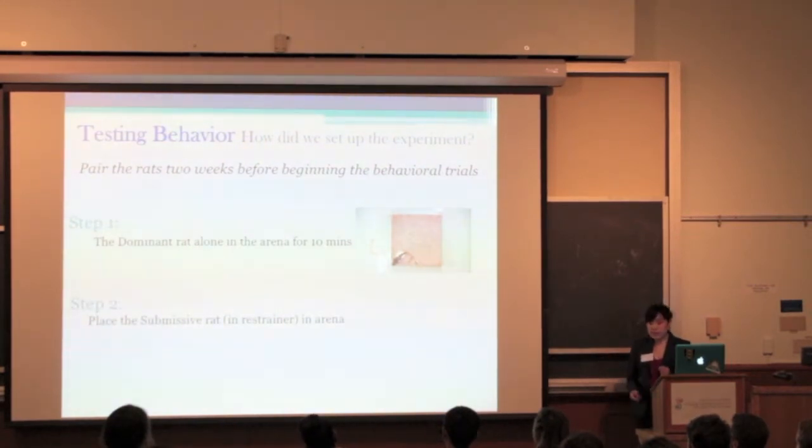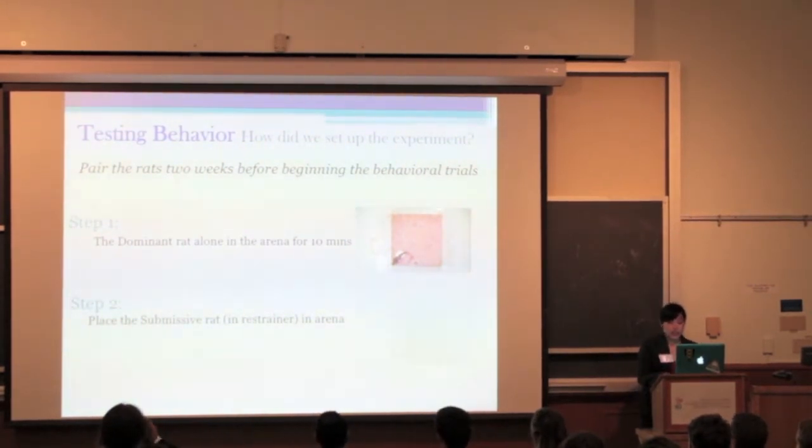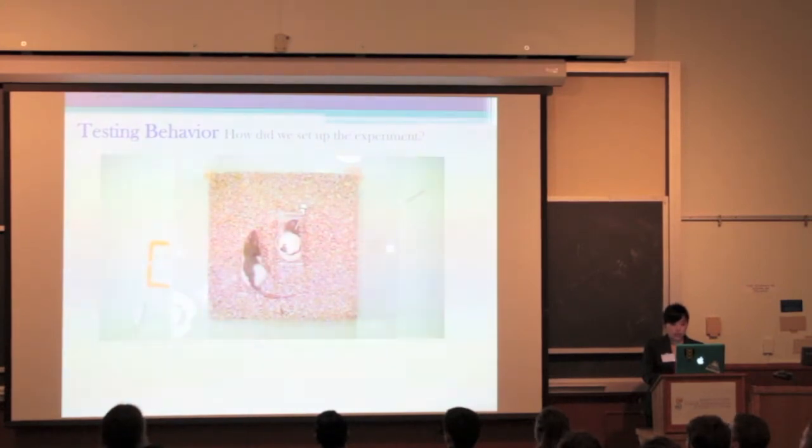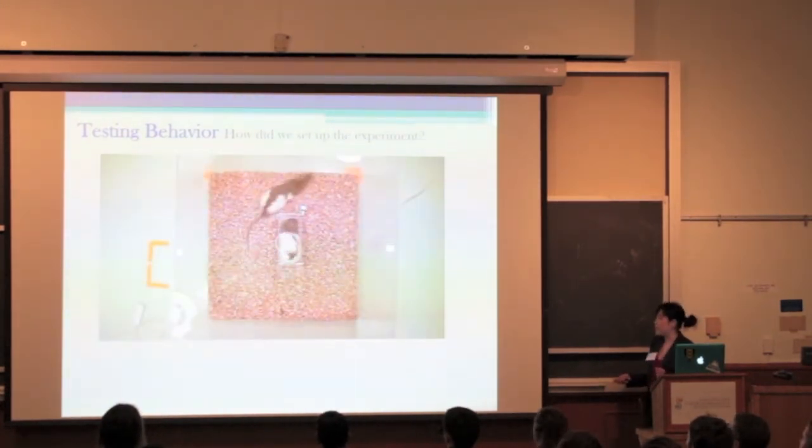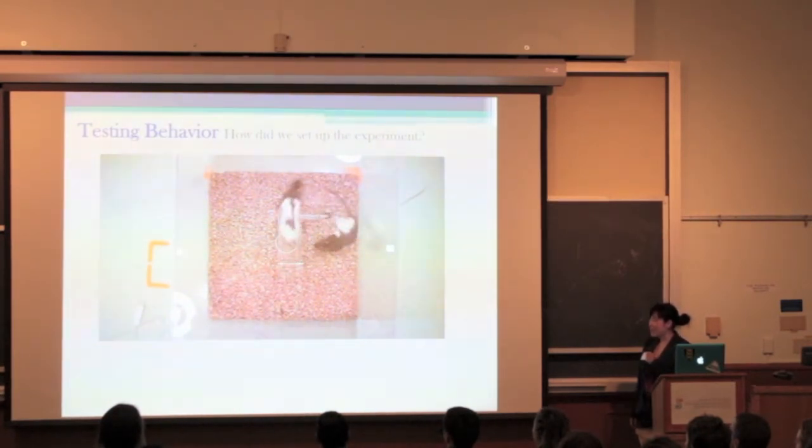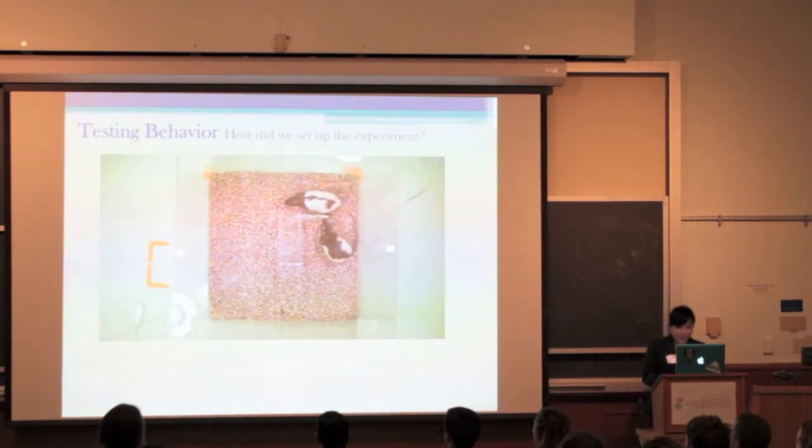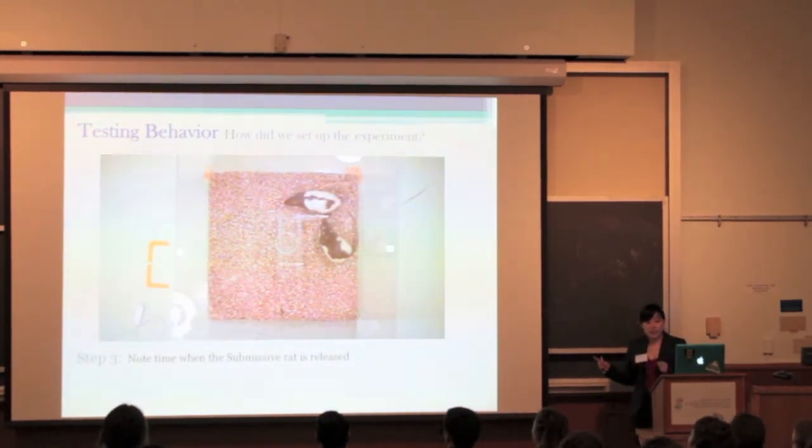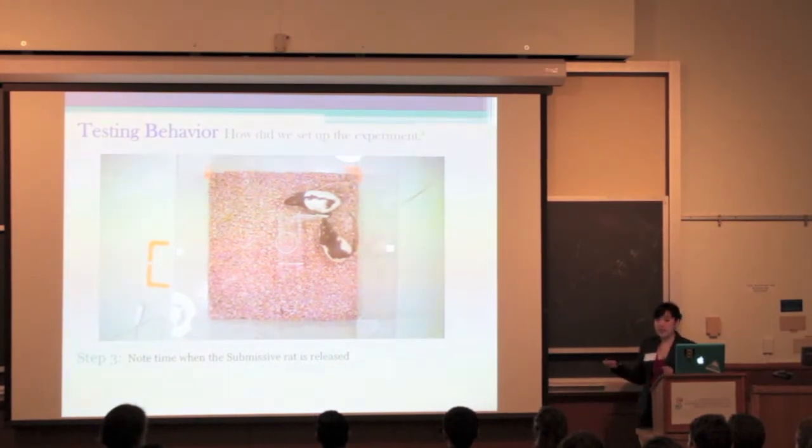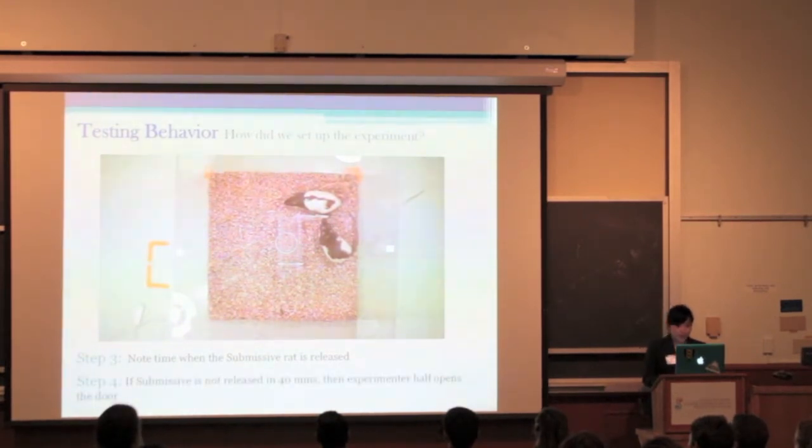The second step is to place the submissive rat, or the one that's more passive, into the restrainer in the middle of the arena, as you can see here. Here is a short video demonstrating the behavior. Yeah, you can clearly see he's working real hard to try to open the door. No doubt about it. We then note the time at which the submissive rat is released, and if the submissive rat is not released in 40 minutes, then the experimenter half opens the door, so the one on the inside does not learn helplessness. Oh, more animations. Whee!